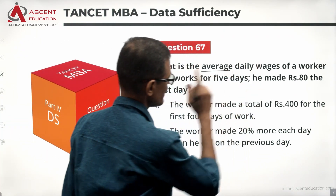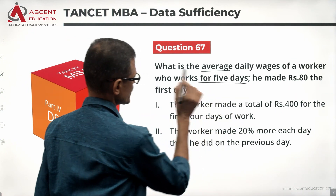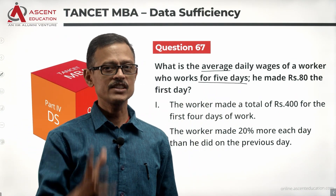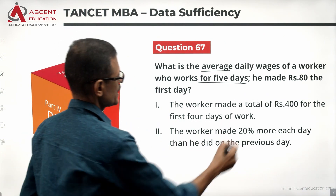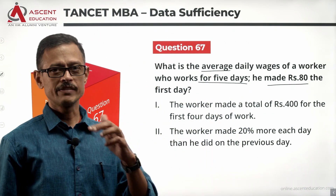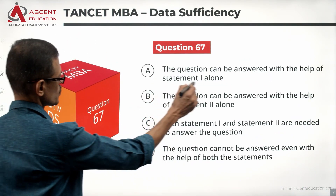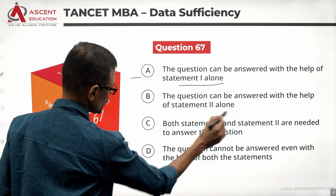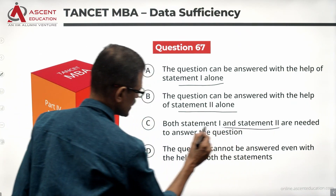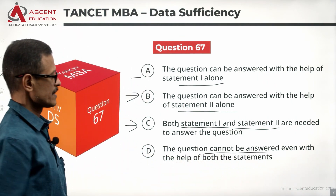What is the average daily wages of a worker who works for 5 days? He made 80 rupees the first day. Take a look at the answer options: Statement 1 alone is sufficient — answer A. Statement 2 alone is sufficient — answer B. Both statements together are sufficient — answer C. The question cannot be answered — answer E.